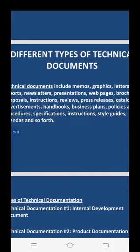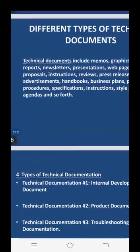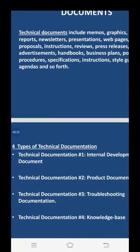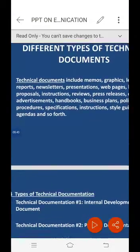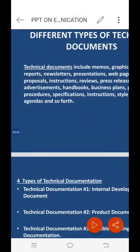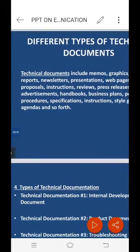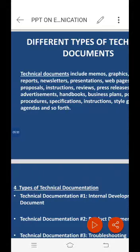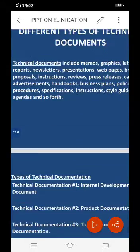Technical documentation number one is the internal development document. An internal development document is used within a company mainly to help product developers plan enhancements or maintain software. This report allows new developers to pick up code created by someone else and continue working on the project. Since this is an internal document, there are no standard naming conventions; however, these records might be called 'notes for program X' or even 'pseudo code.'